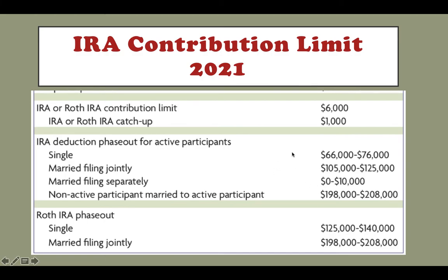The question is whether it is tax deductible or not, based on your income. For the Roth IRA, it is always an after-tax contribution. If you make too much money, you are not eligible to make a contribution to the Roth IRA. If you are single and your modified AGI is greater than $140,000, you are not eligible to contribute to a Roth IRA. For married filing jointly, if your modified AGI is less than $198,000, you are eligible to contribute to a Roth IRA.